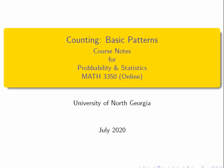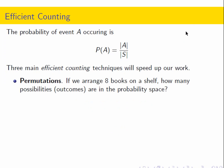Welcome to the University of North Georgia online version of MATH 3350, Probability and Statistics. This is our second lesson, and we'll be talking about basic counting patterns. We have the single probability formula: we count up the total number of outcomes in event set A and divide by the total number of possible outcomes in the entire probability space. So it's all about counting, and we need to learn different types of counting techniques that will speed up our work.